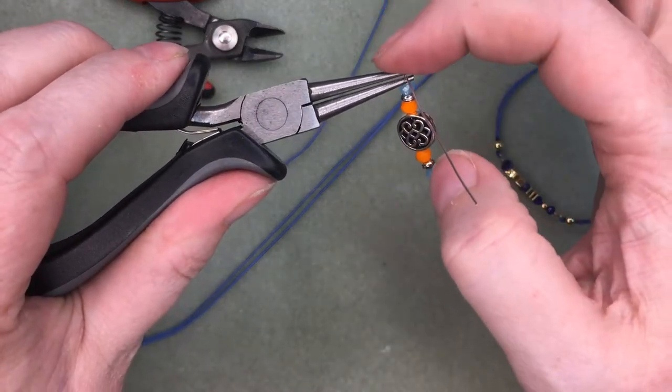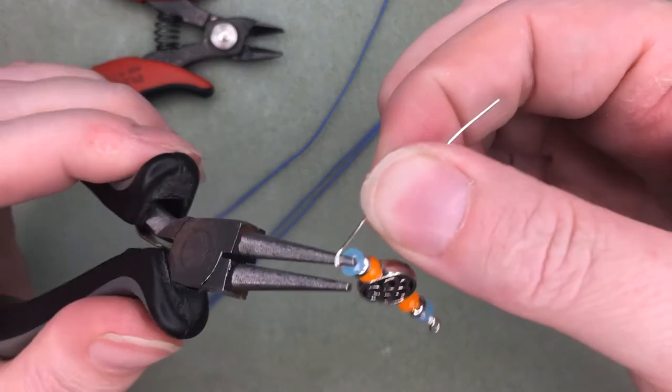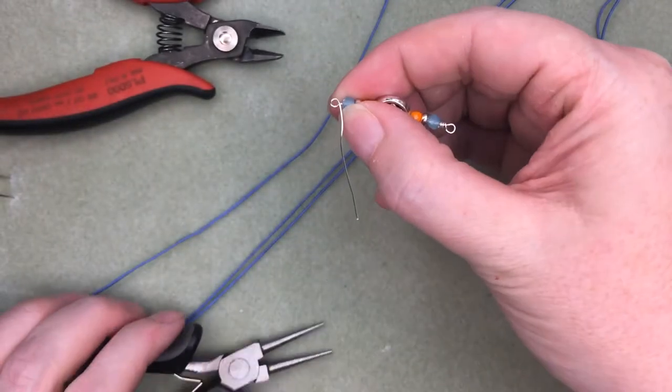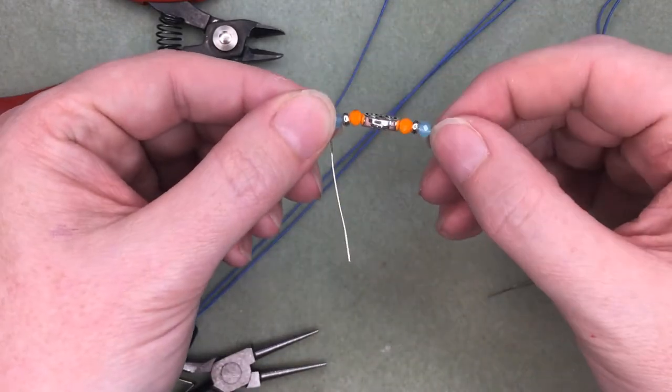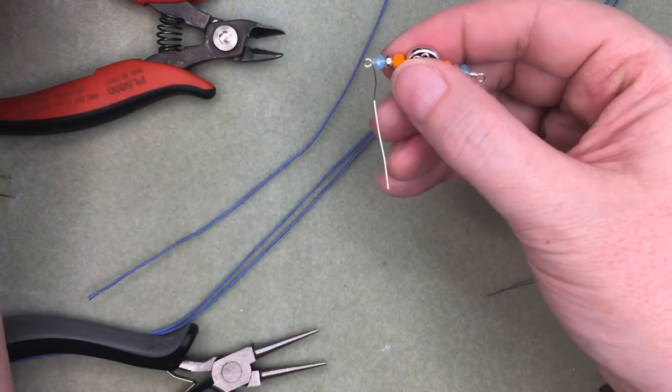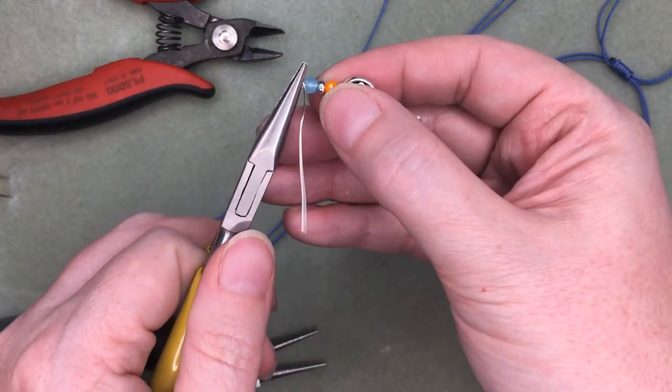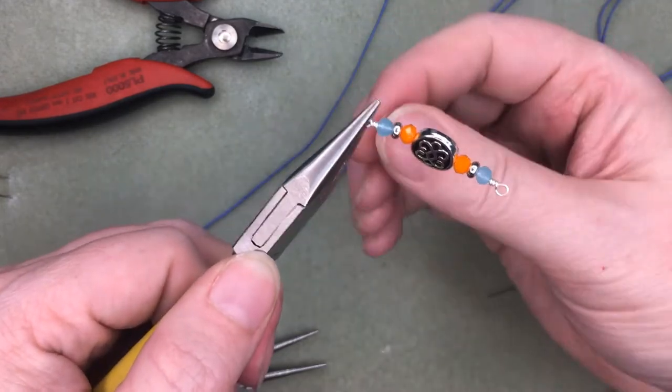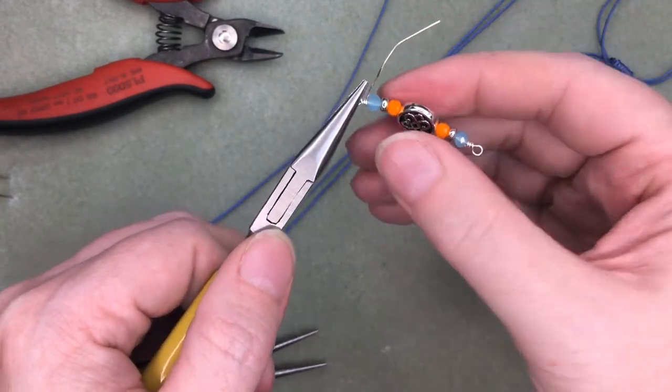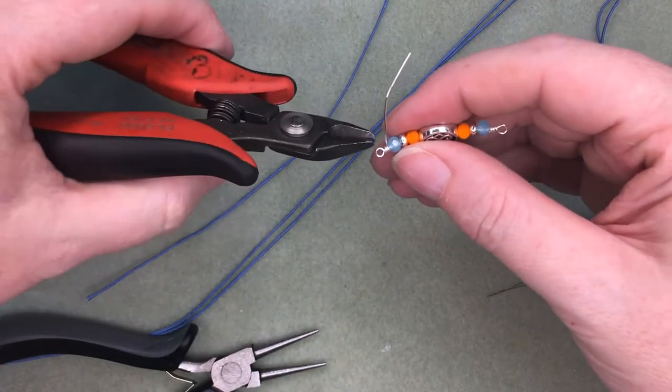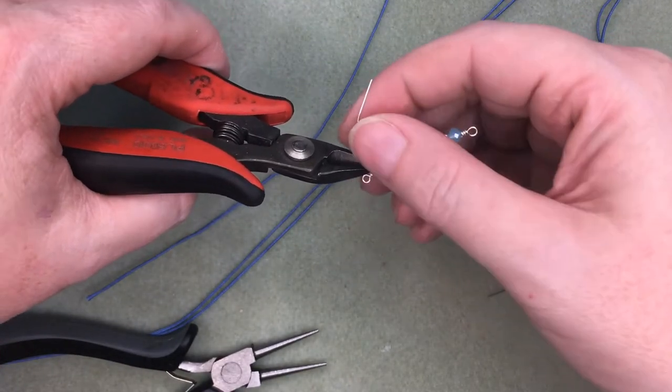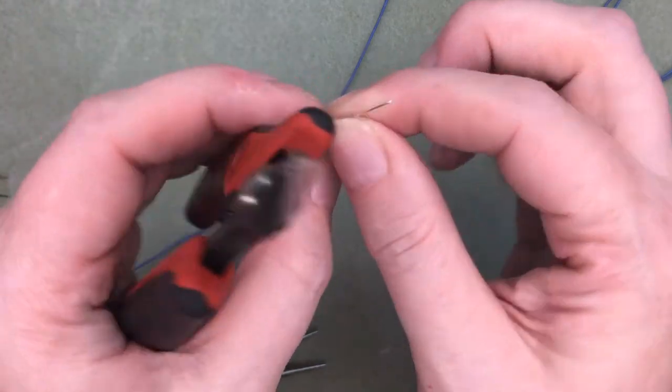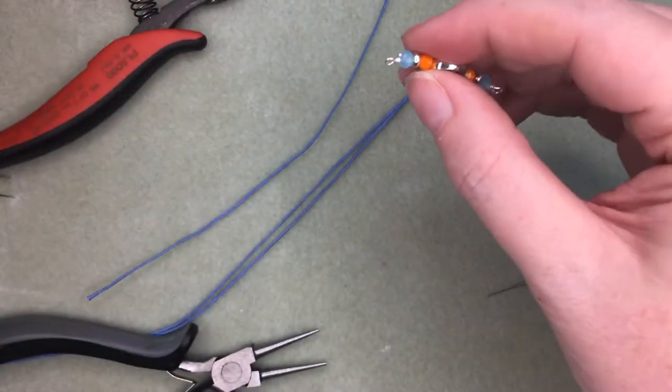And then I'm going to shift my pliers because I want to come around this barrel to create my loop. So there's the loop and it looks similar in size to the one on the other end. And then I'm going to just hold with my needle nose pliers and wrap the loop tight. Now the reason I'm holding with the needle nose pliers and not the round nose pliers is every time you hold the wire with your round nose pliers, you're putting a mark on the wire and you can actually squeeze through the wire if you're not careful. So take the tail end off.